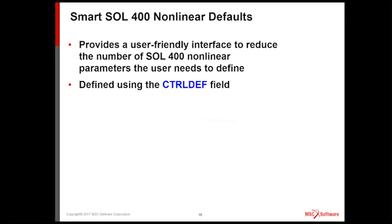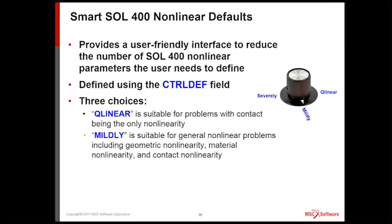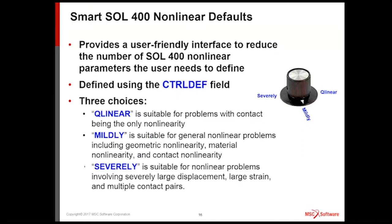I'll show you a little bit of Nastran entry, just so you kind of know where it is, and then we'll go into the graphical interface and set this up. So you have three choices when you go to the NLSTEP under the control definition field. You can choose QLINEAR. This is good for small displacement problems with contact being the only nonlinearity. This one will solve really fast, with a single step. MILDLY is good for general problems. Any time you have geometric material and contact nonlinearity, mildly is a good starting point for most of your problems.